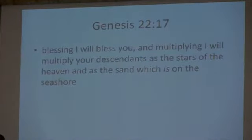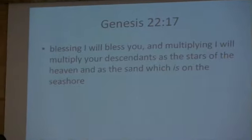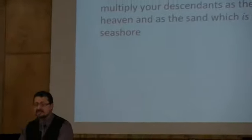Abraham has two kinds of descendants. He has earthly descendants — the nation of Israel, which is represented by the sand of the sea. But he also has spiritual descendants, the church — those who, like Abraham, come to God simply by faith. And they are represented as the stars of the heaven, not earthly but spiritual heavenly descendants.